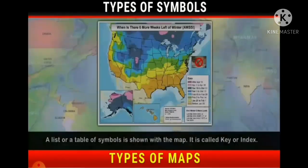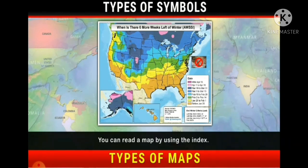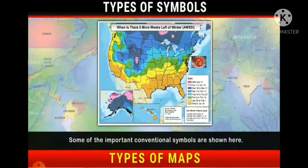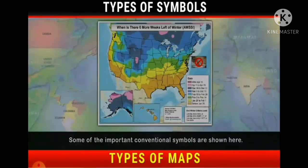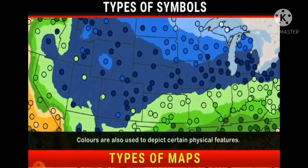Thus, maps have a universal language that can be understood by all. A list or table of symbols shown with the map is called a key or index. You can read a map by using the index. Some of the important conventional symbols are shown here.